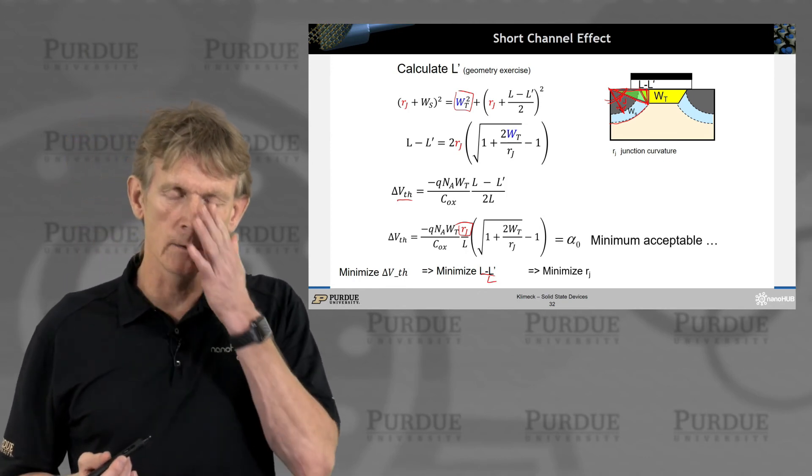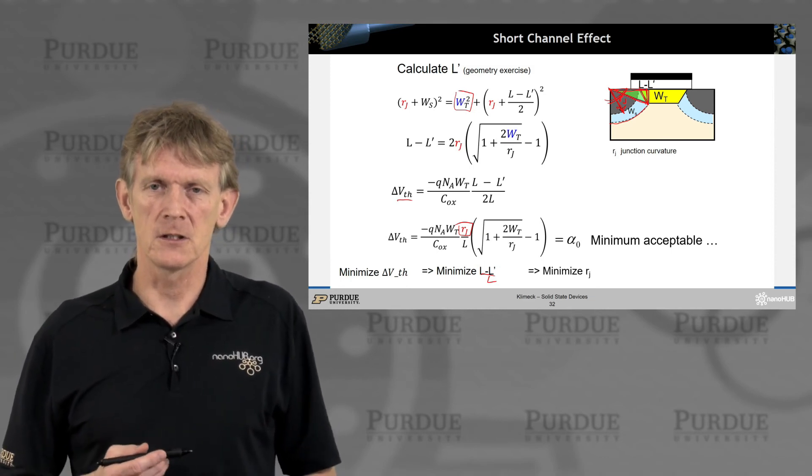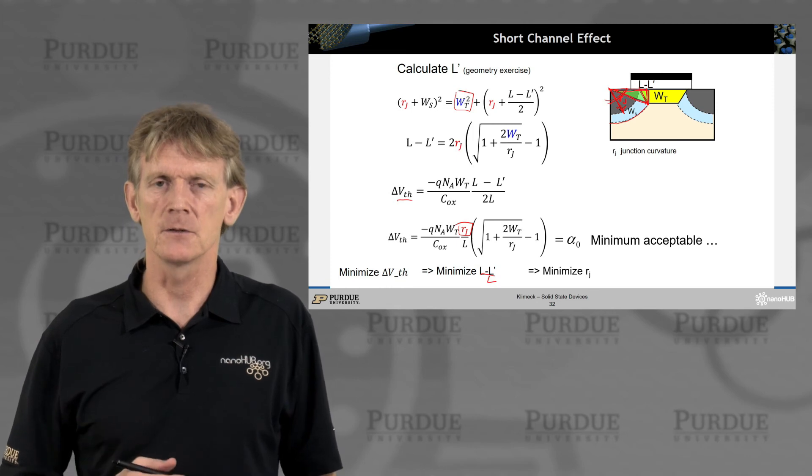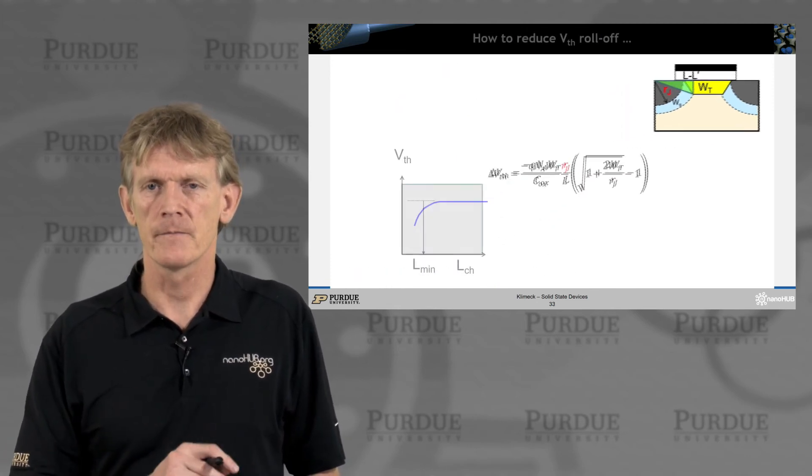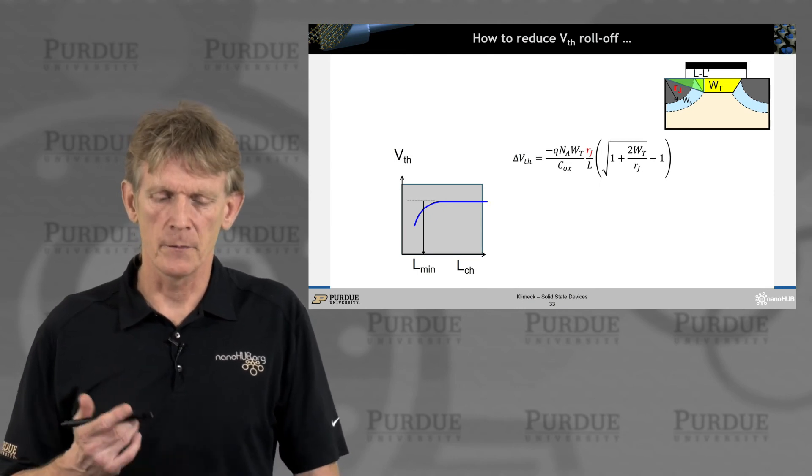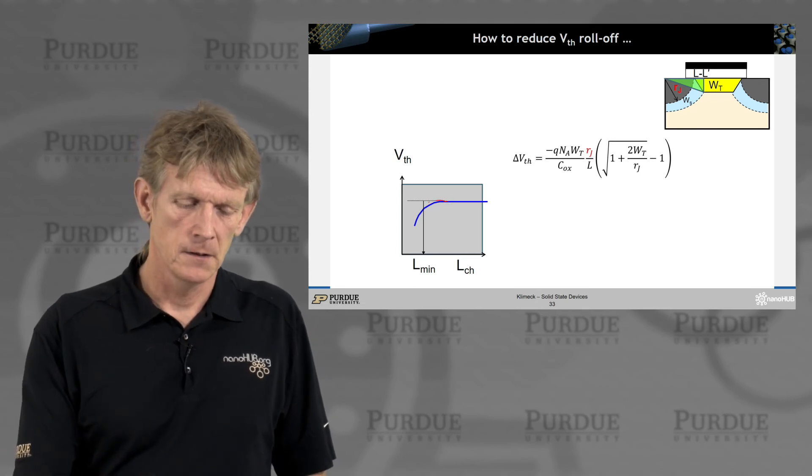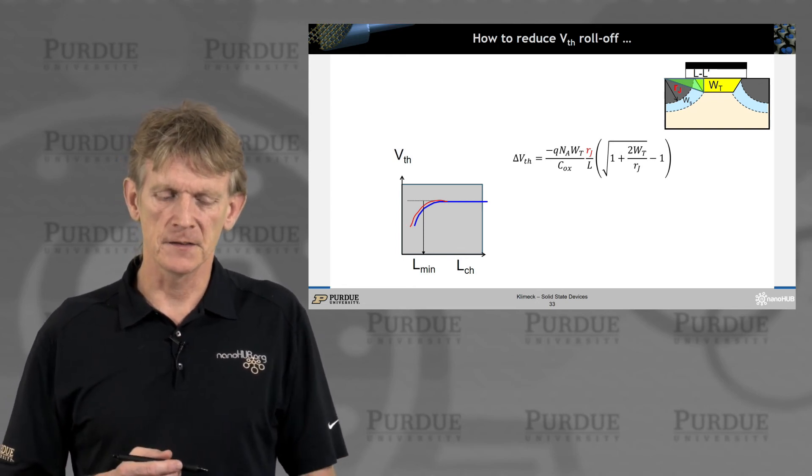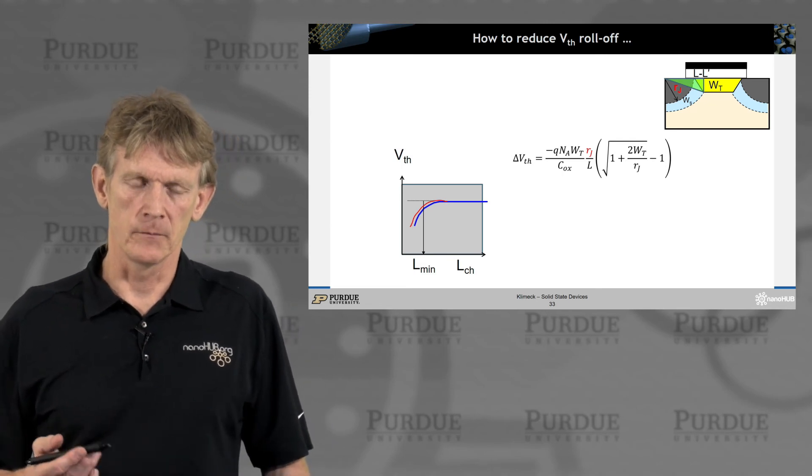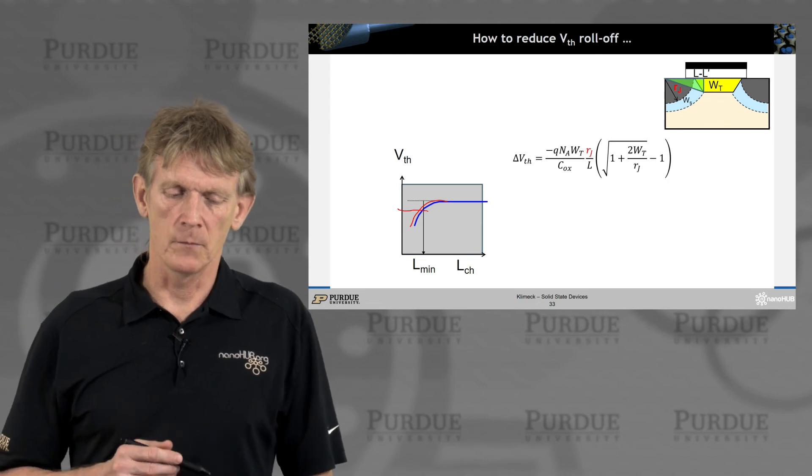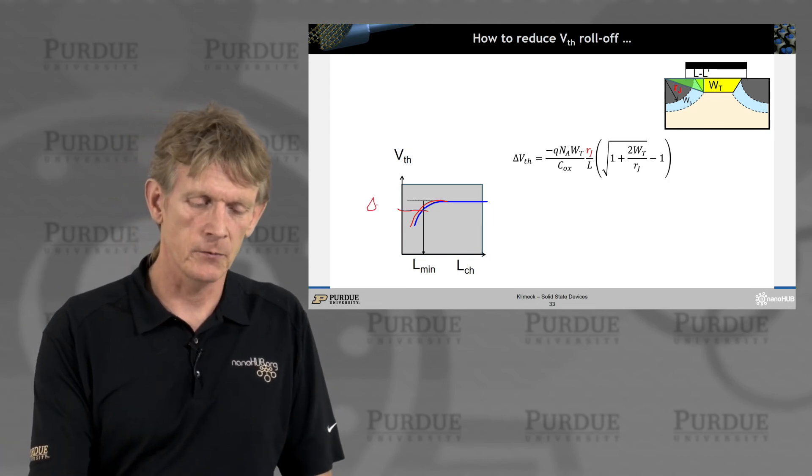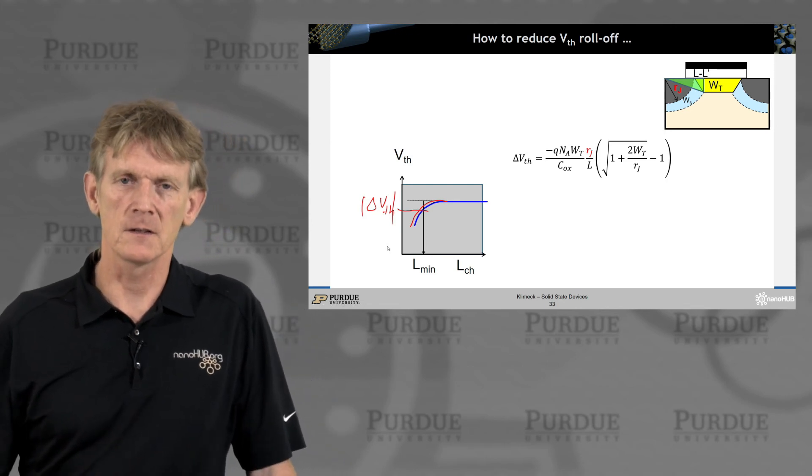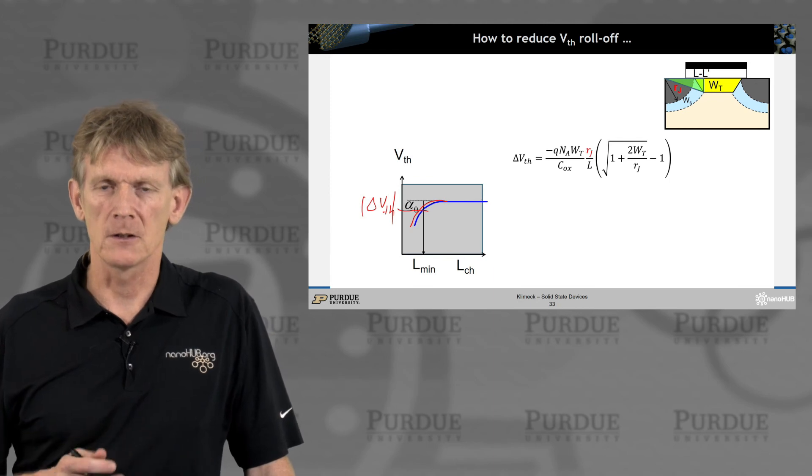You can define some minimum acceptable threshold voltage shift that you, as an engineer, are willing to live with. That will give you an answer as to the junction depth that you might want to consider in your design. That is the math that shows you that at some point your threshold voltage will go down. It will have a negative shift. You can define some maximum threshold shift you're willing to deal with, and then that defines some minimum value in L and gives you some alpha that you can design for.